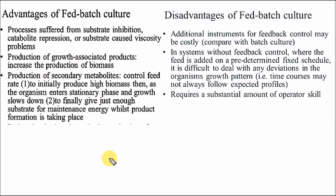These are the advantages and disadvantages of fed batch culture. Advantages: it is very useful for processes with substrate inhibition or catabolic repression; it is helpful for production of growth-associated products; biomass production is increased; and secondary metabolites can also be produced. Disadvantages: additional instruments for feedback control may be costly, and compared with batch culture, it requires a substantial amount of operator skill.